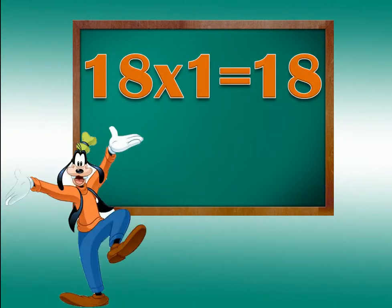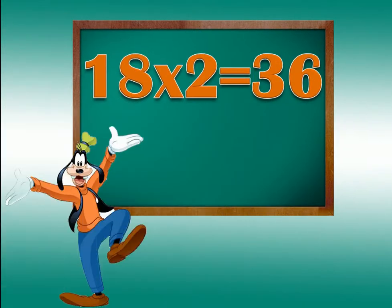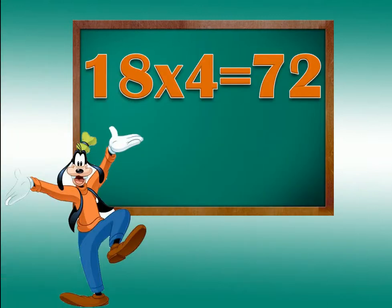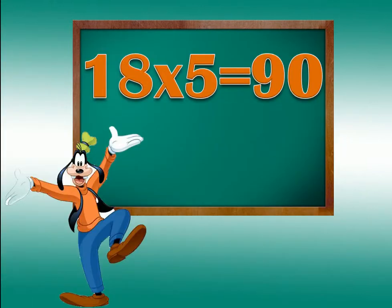18 ones are 18. 18 twos are 36. 18 threes are 54. 18 fours are 72. 18 fives are 90.